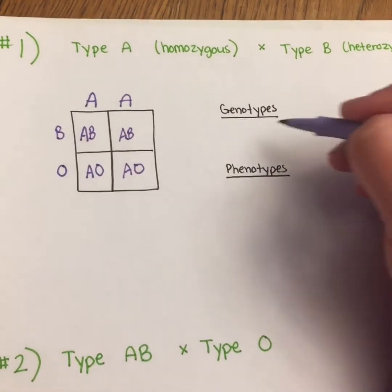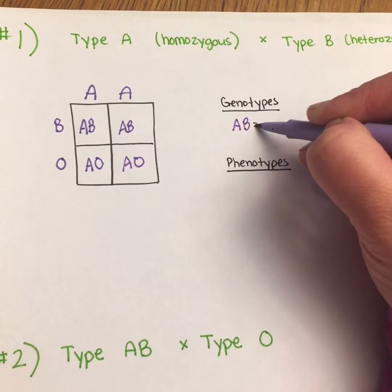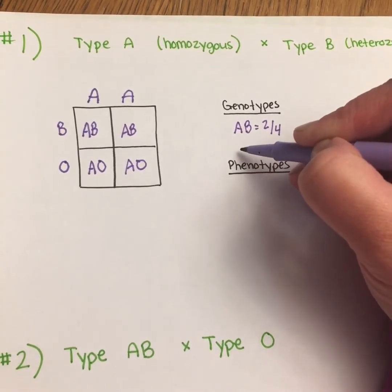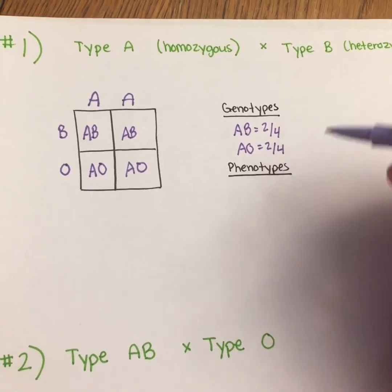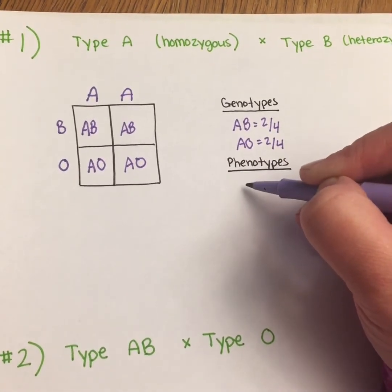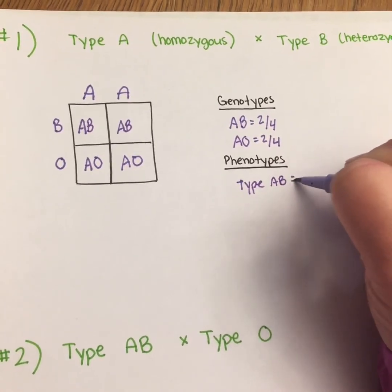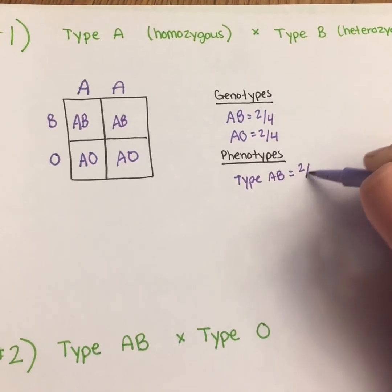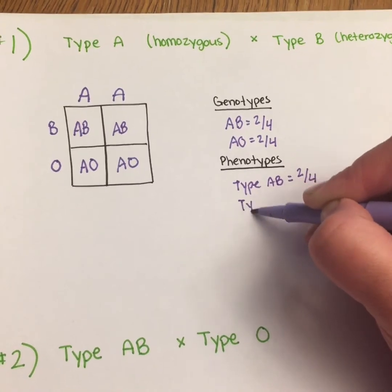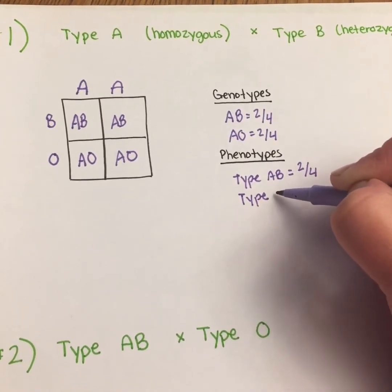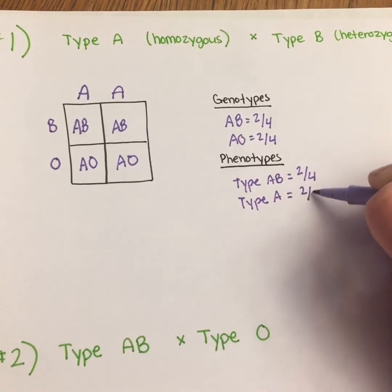In this case, our genotypes will be type AB — two out of four — and type AO — two out of four. For phenotypes, one possibility is type AB blood, two out of four. The other possibility will be type A blood, because A is dominant over O, also two out of four.